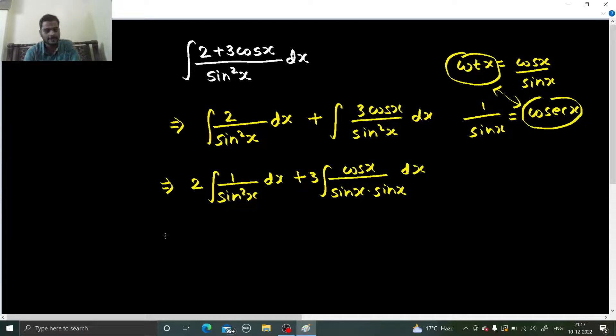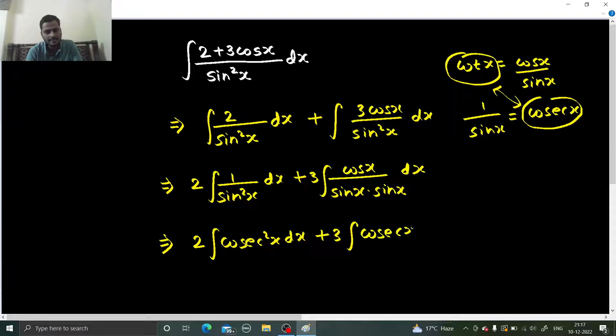x cot x is there, and one by sine square x will give you cosecant square x. So 2 integral of cosecant square x plus 3 integral of cosecant x cot x.